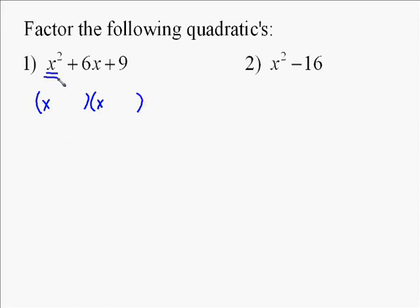We have x squared, so we know we have x times x. Now, what's different about this is we have 9 times 1, but we also have 3 times 3. So this is a perfect square.